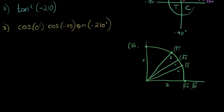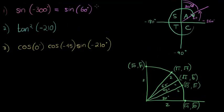The y-value for the first point is 0, and for the next points: square root of 1, square root of 2, square root of 3, and the last one is square root of 4, which is 2. Now we want sine of 60 degrees. Sine is y over r, r is 2, and y for 60 degrees is square root of 3. So this answer is square root of 3 over 2.